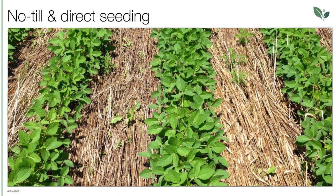The result looks like this: the soil is totally covered by the dead pre-crop, which protects it from drying out or from rain. By composting the material, the soil life is constantly fed. As interesting as this approach is, it has so far been used almost exclusively by conventional farmers in combination with genetically modified and glyphosate-tolerant crops such as soy.